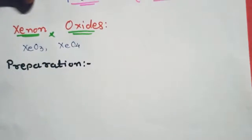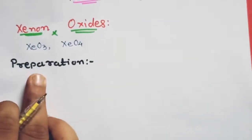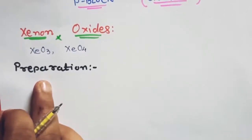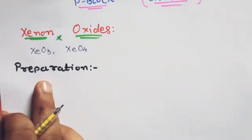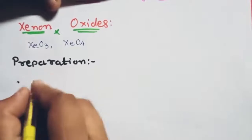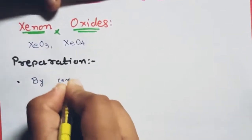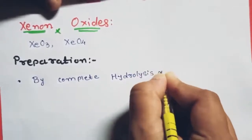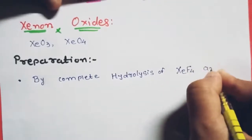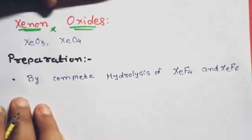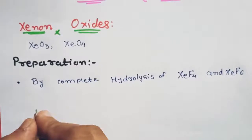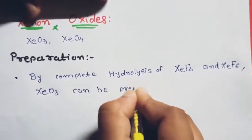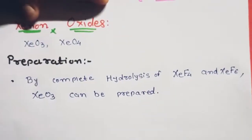First, let's see the preparation. Xenon trioxide can be prepared by complete hydrolysis of xenon tetrafluoride and xenon hexafluoride.